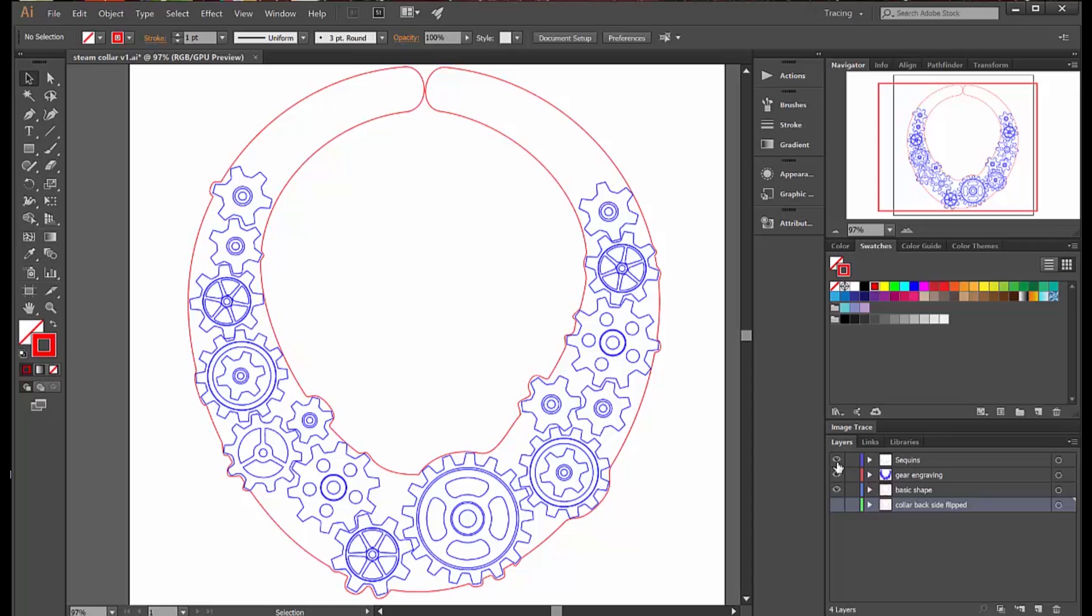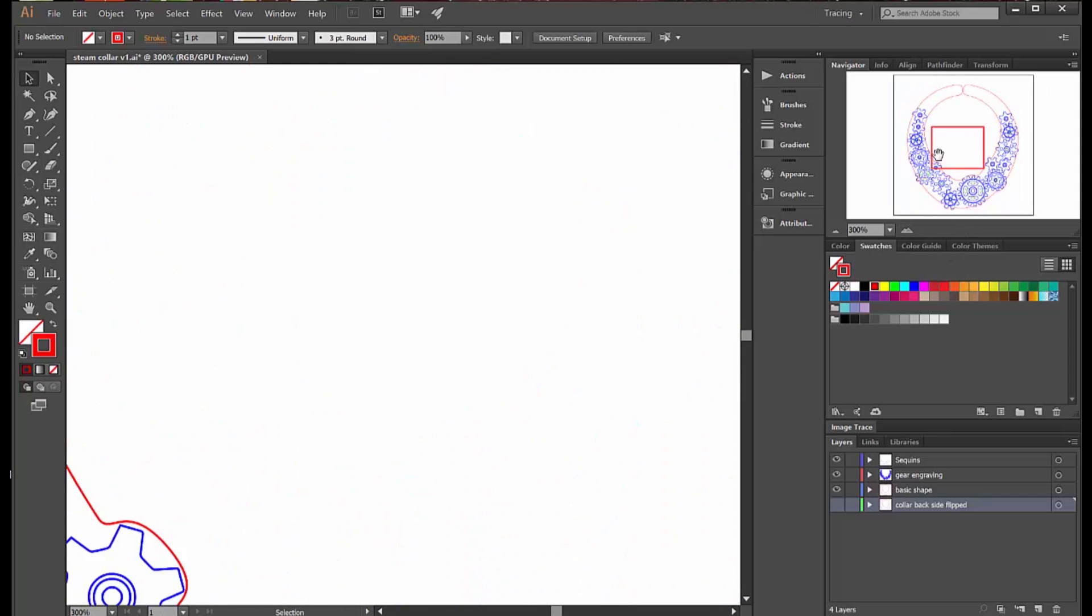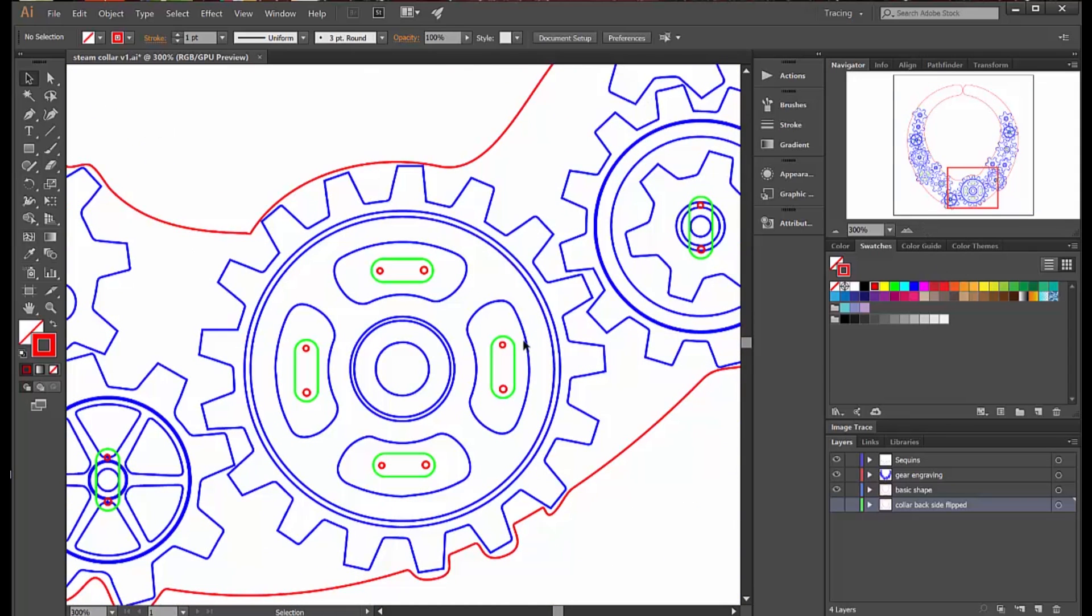For my laser, red is the cut line, blue is for engraving, black is for raster, and any other color you use doesn't show up on the laser.